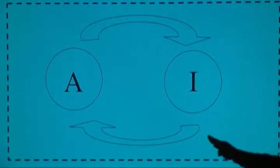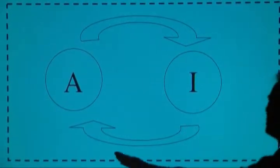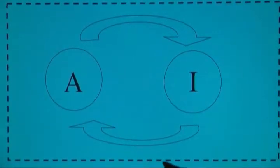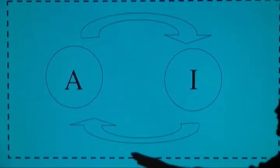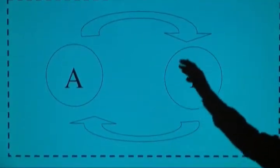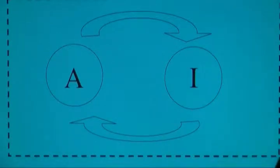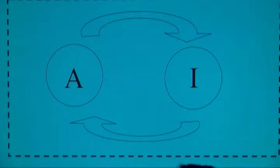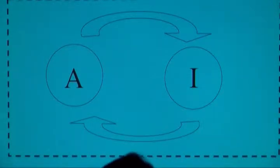If we look at this, notice the little arrows right here — the A and the I. This is the model we're following: assessment and instruction is a continuous cycle. You assess, you instruct, you reassess, you evaluate.